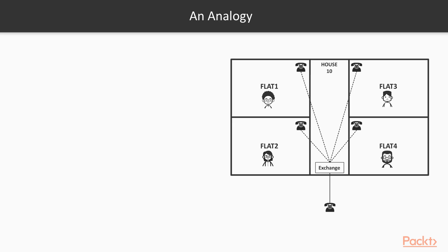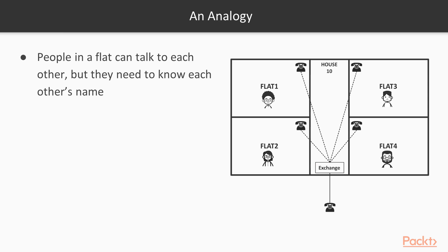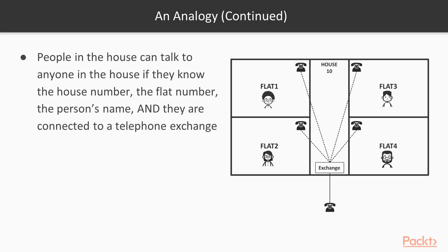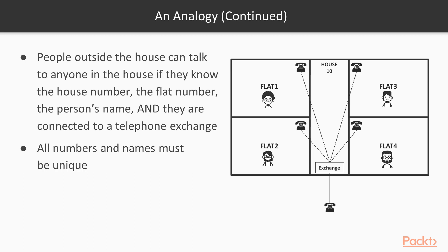Let's start with an analogy. We have a house — house number 10, flat one to four — and it has an exchange that connects the house, the flats, and the outside world. People within a flat can talk to each other, but they need to know everybody's name. People in the house can talk between flats as long as they know the flat number and the person's name. People in the house can also talk outside, and people outside can talk inside, as long as they know the house, the flat, and the person — and all addresses must be unique.